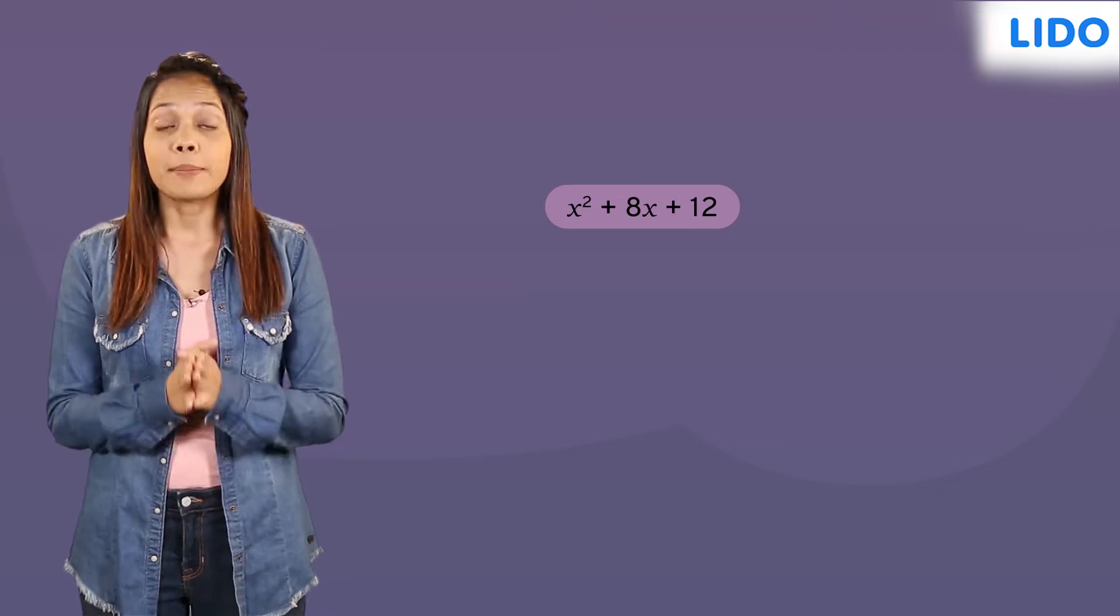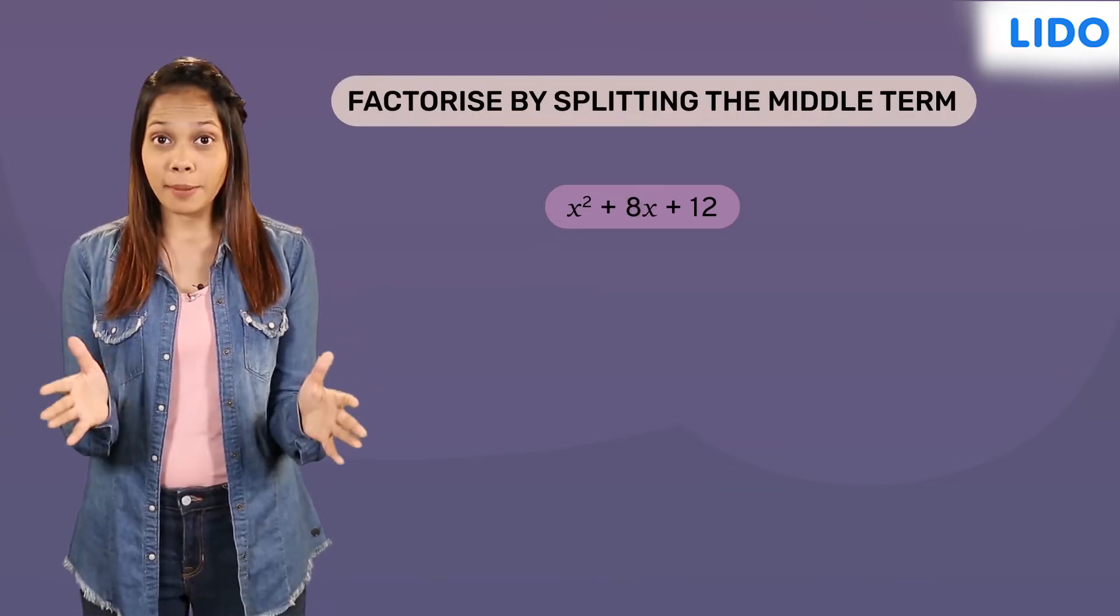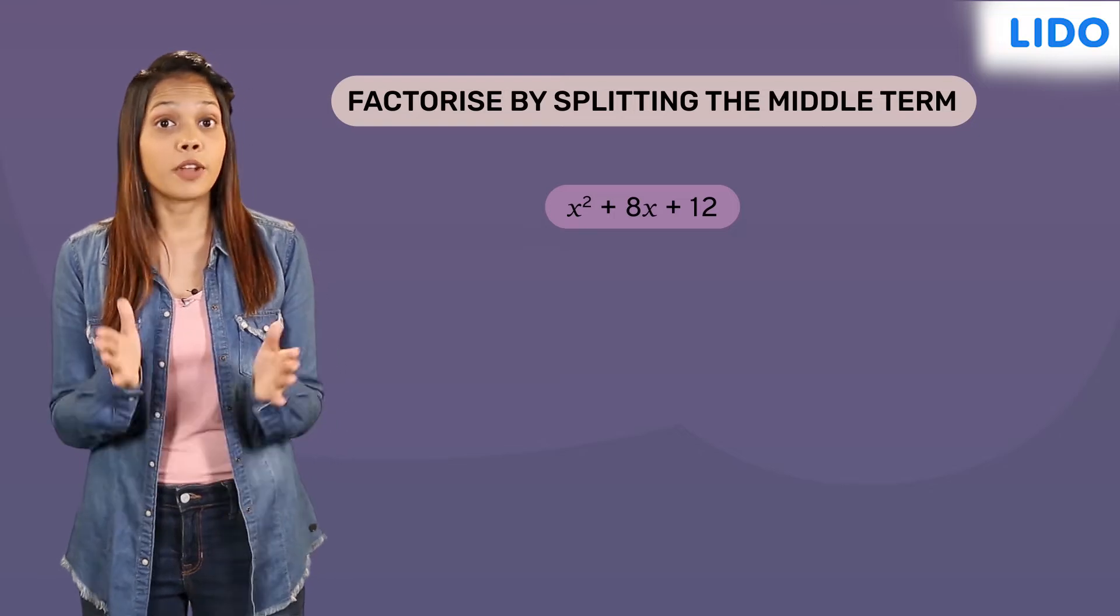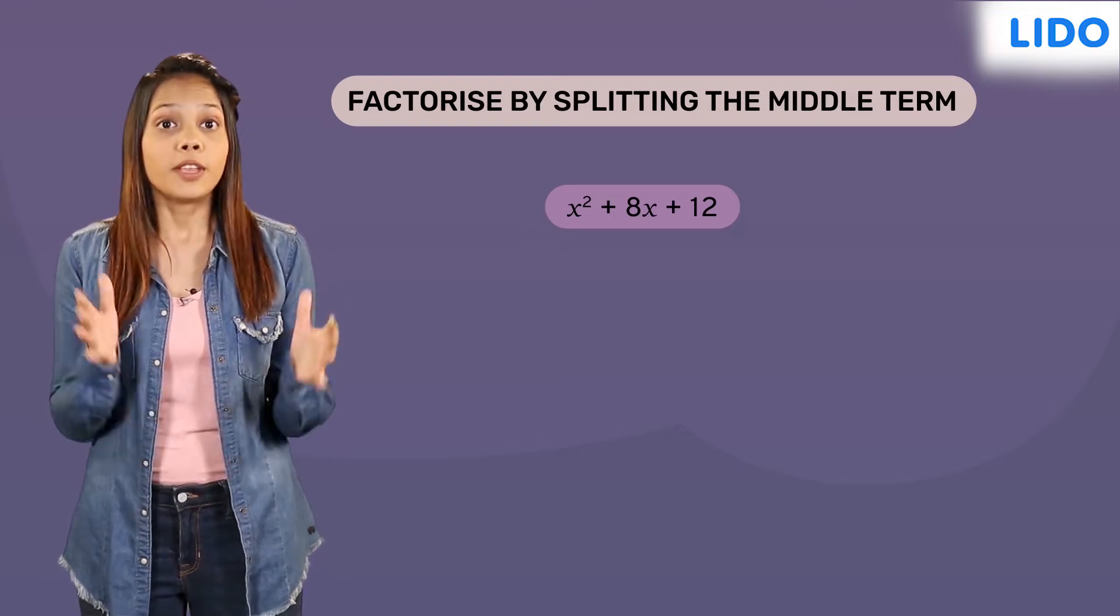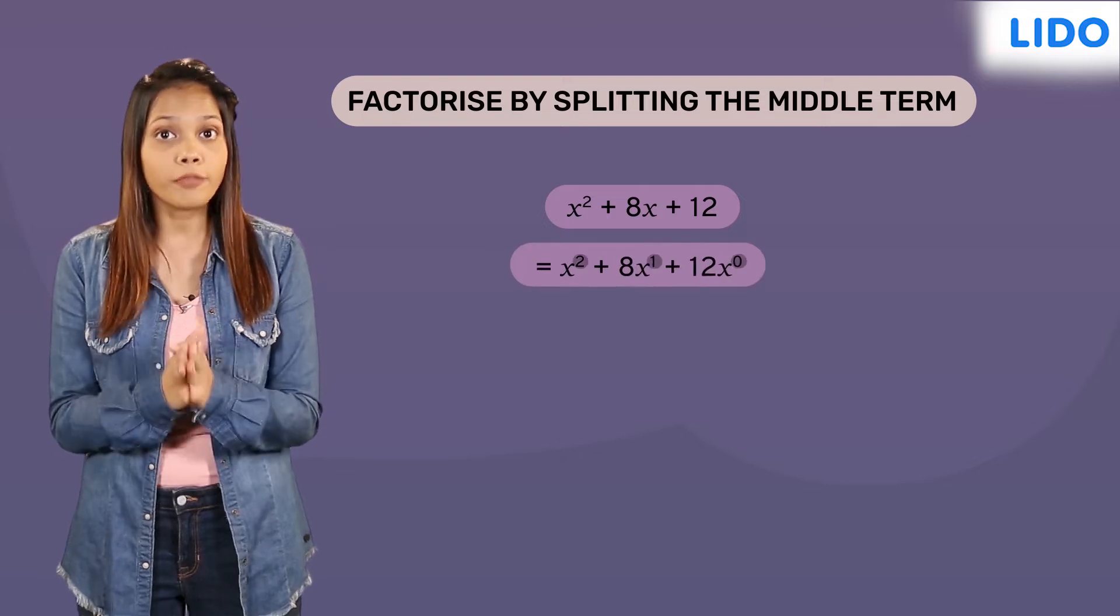Such expressions can be factorised by the method of splitting the middle term. Let's understand this method in detail. If required, then first we will rearrange the quadratic expression in descending powers of the variables.